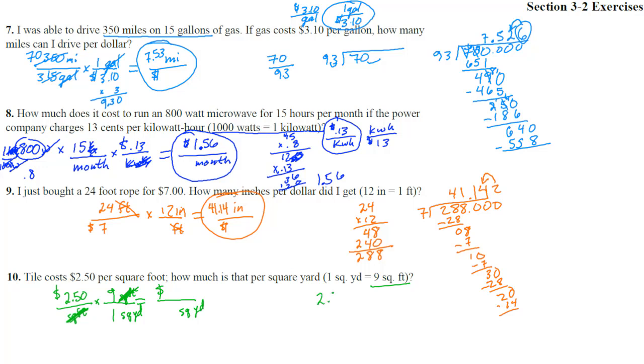So 2.5 times 9: 9 times 5 is 45, carry the 4. 9 times 2 is 18, plus 4 is 22. One decimal place. We have $22.50 per square yard. Great.